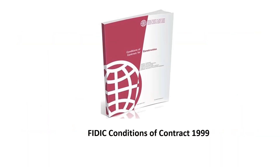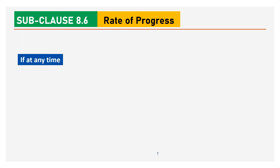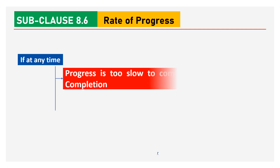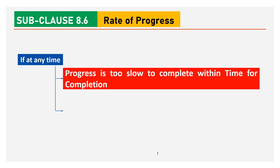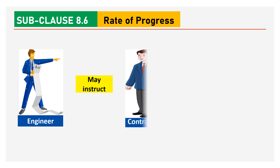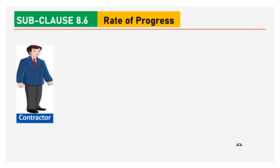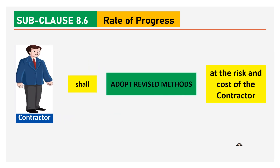Now let us see what remedy is provided under FIDIC conditions of contract 1999 edition. Under FIDIC 99 edition, subclause 8.6 deals with rate of progress. This subclause provides that at any time during construction, if progress is too slow that the project cannot be completed within the time for completion, and/or progress has fallen or will fall behind the program submitted under subclause 8.3, the engineer may instruct the contractor to submit a revised program under subclause 8.3 describing the methods to complete the works within the time for completion.